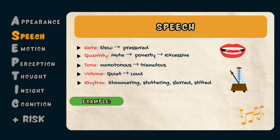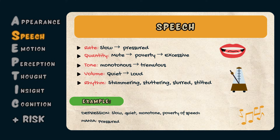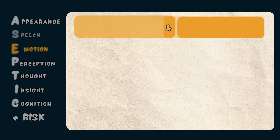For example, a patient with depression may have slow, quiet, monotonous, and poverty of speech. A patient with mania, on the other hand, may have pressured, loud, and confident speech that is difficult to interrupt.